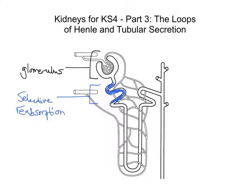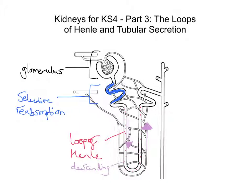It essentially revolves around this U-shaped structure, which is called the loop of Henle. We can split it into three sections: the first part is the descending limb, which goes down; then we have the curved part at the bottom; and then there's the portion that goes up, which is called the ascending limb.